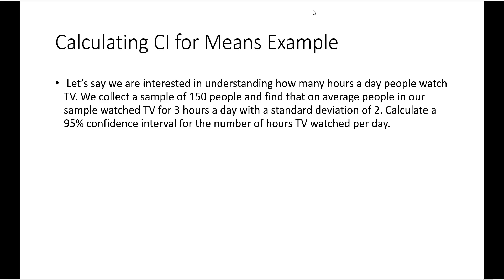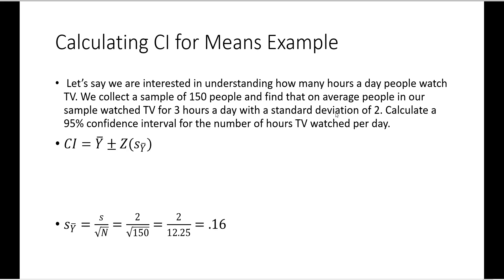Let's look at an example. We are interested in understanding how many hours a day people watch TV. We collect a sample of 150 people and find that, on average, people watched TV for 3 hours a day with a standard deviation of 2. We want to calculate a 95% confidence interval. Because we do not have population information, we use the standard error for our sampling distribution. That standard error equals our standard deviation of 2 divided by the square root of our sample size of 150, giving us a standard error of 0.16.